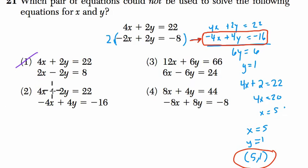The second choice, 4x plus 2y equals 22, same first equation. And the second equation looks like they multiplied everything by 2, just like I did. So these are both equal equations, just scaled up or scaled down.